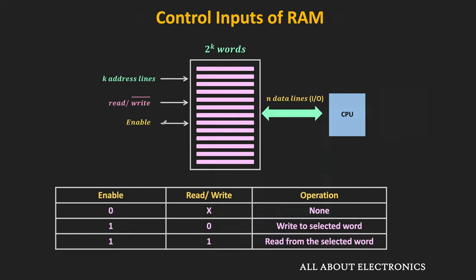Whenever the enable pin is 0, the memory chip will get disabled, and regardless of the value of the read-write control signal, no operation is performed on the memory. Whenever the enable pin is 1, the memory will get enabled, and depending on the read-write control pin, the memory will perform either a read or write operation.